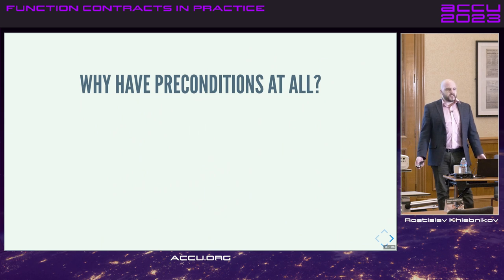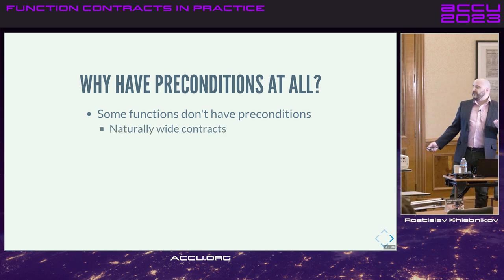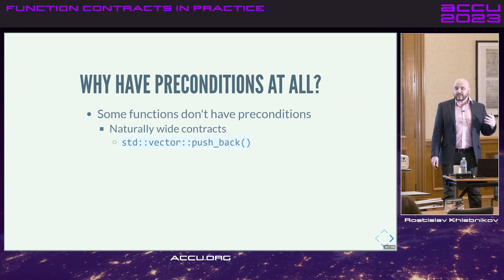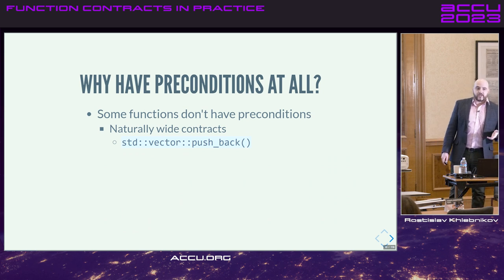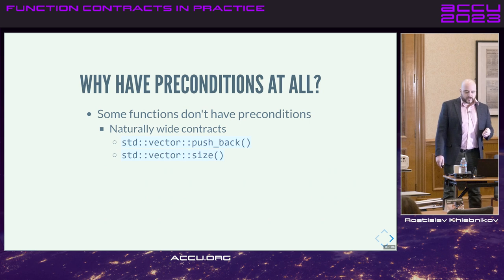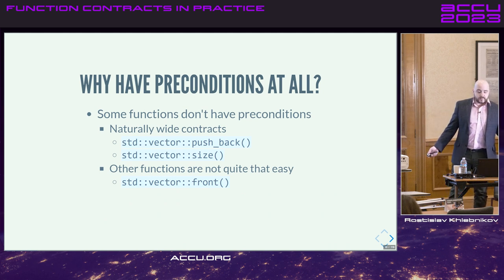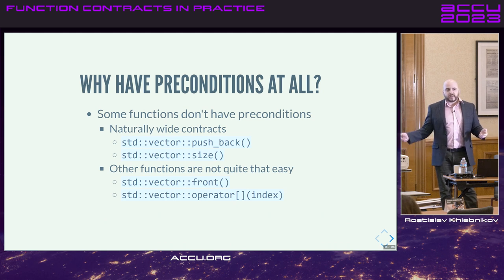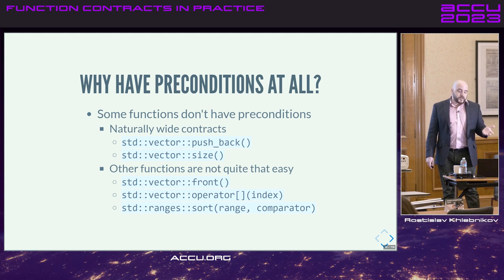You might ask: why do we need preconditions at all? Why don't we have every function handle every possible input? Well, some functions are actually like that — they have naturally wide contracts. Classic examples are vector push_back, which you can always call, and vector size — you don't need to satisfy any preconditions for these. But other functions are not quite that easy. For example, vector front: what if the vector is empty? Same for the indexing operator: what if you index outside the range? And even more complex preconditions exist in the standard library — the sort function requires its comparator to impose a strict weak ordering on the elements of the range.